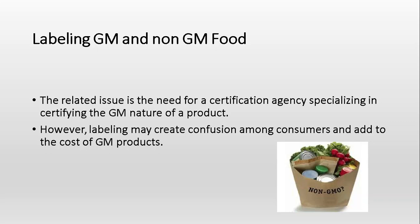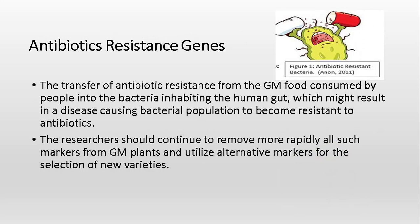Another point is antibiotic resistance genes. The transfer of antibiotic resistance from GM food consumed by people into the bacteria inhabiting the human gut is a major concern. Eating food with antibiotic resistance genes can affect the microflora in our gut, and it may provide resistance to bad bacteria already present, resulting in a disease-causing bacterial population becoming resistant to antibiotics. Researchers should continue to remove all such markers from GM plants and utilize alternative markers for selection of new varieties.